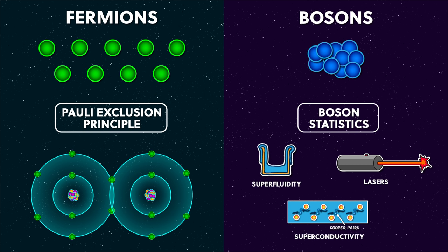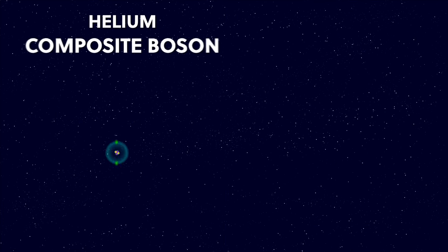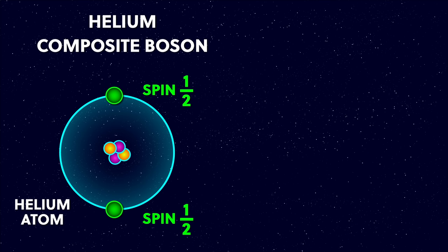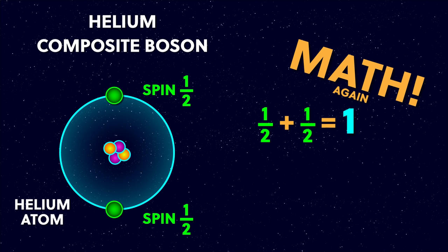Interestingly, it isn't just the fundamental particles that these rules apply to. The Bose statistics for bosons and the Pauli exclusion principle for fermions apply to collections of particles as well. So for example, helium is known as a composite boson, as it has two electrons which have spin half each. If you add these spins together, you get a whole number — a boson. This means that helium atoms behave like bosons.